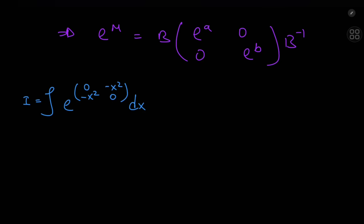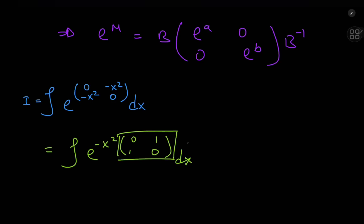Now that we have a plan, it's time to set it in motion. The first thing I'd like to do is factor out a negative x squared term from the given matrix, so I can write this as e to the negative x squared times the simple matrix A = [[0,1],[1,0]], integrated with respect to x. I'm going to call this matrix A and diagonalize it.